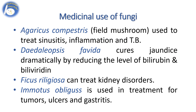Agaricus campestris, which is a field mushroom, is used to treat sinusitis, inflammation, and tuberculosis. Daedaleopsis flavida cures jaundice dramatically by reducing the levels of bilirubin and biliverdin. Ficus religiosa can treat kidney disorders. Ganoderma species is used in treatment for tumors, ulcers, and gastritis.